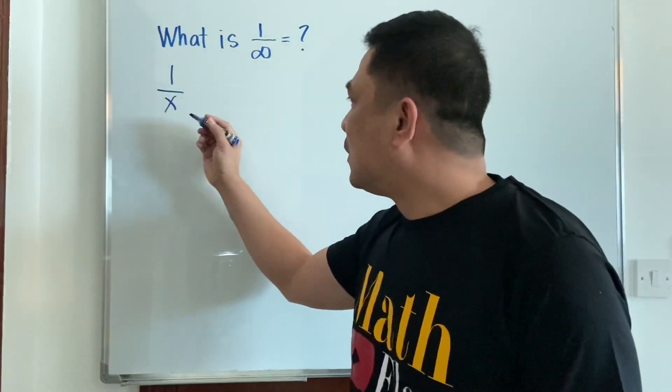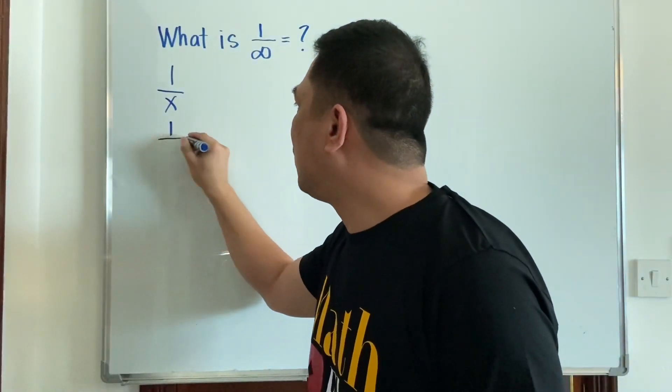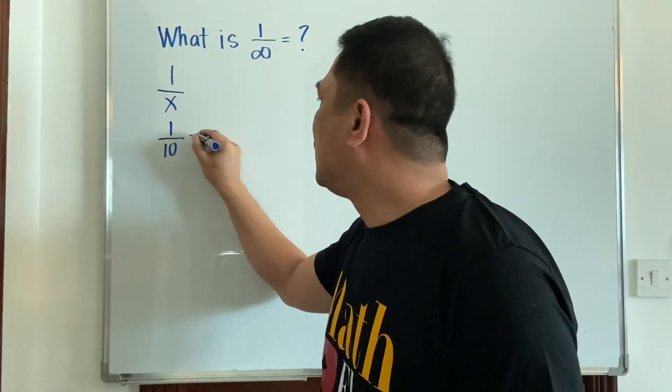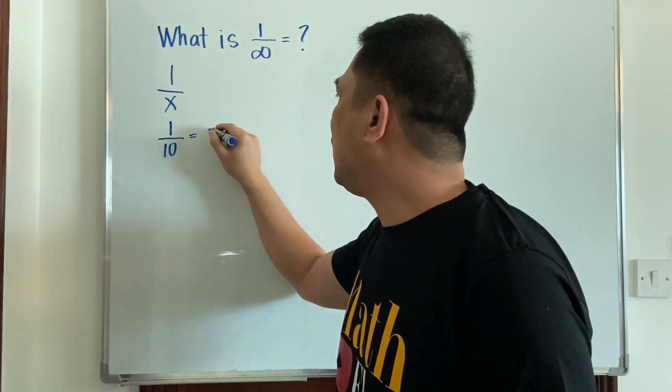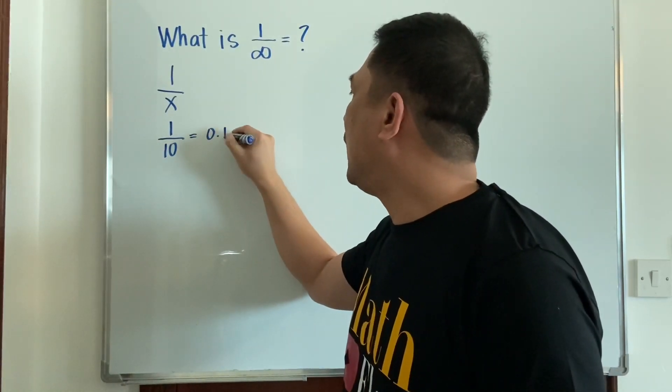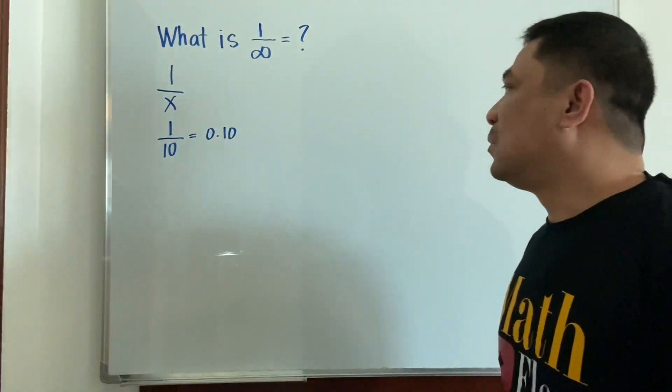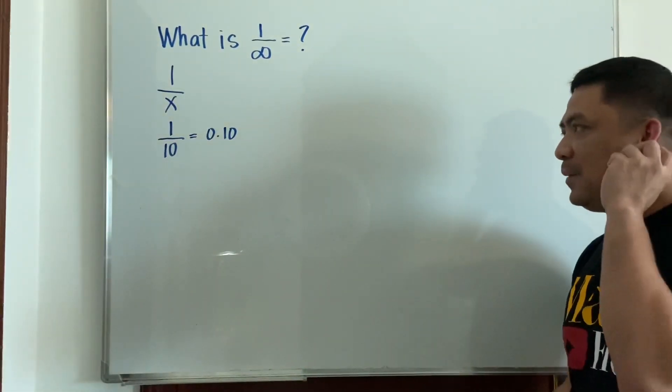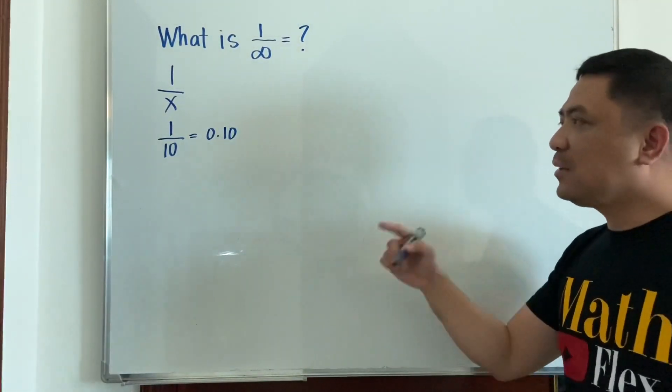We have here 1/10. This will give us, I think, 0.1, right? So 1 divided by 10 is 0.1. And as I've said, we'll try to increase it more.